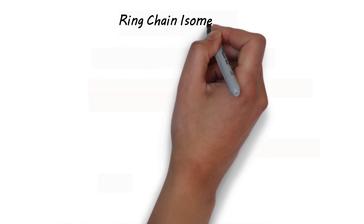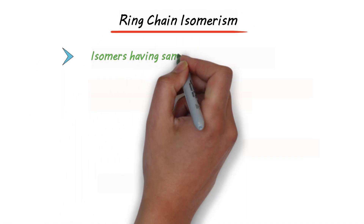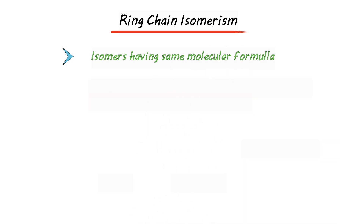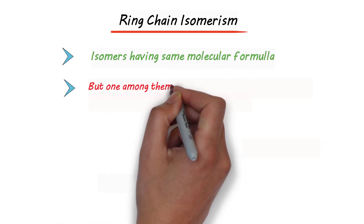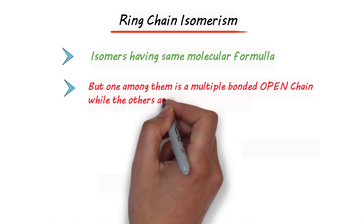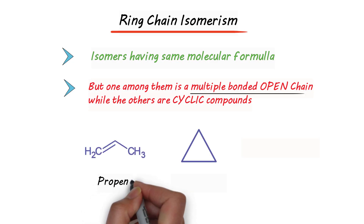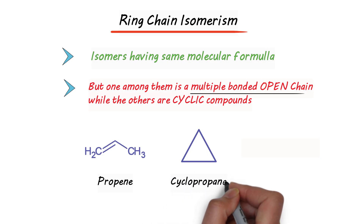Welcome back. Let's talk about ring-chain isomerism — isomers having the same molecular formula, but one among them is a multiple-bonded open chain while the others are cyclic compounds. Multiple-bonded open chain means the molecule contains either double or triple bonds. For example, while looking at these two molecules, the first one is propene while the other is cyclopropane.